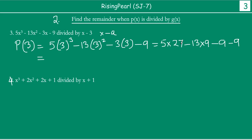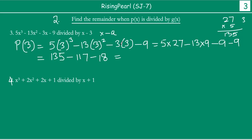So let us do this. 27 times 5: 5 sevens are 35, carry 3, write 5; 5 twos are 10, plus 3 is 13. So 135. Then 13 nines are 117. So 135 minus 117 minus 9 minus 9 will give minus 117 and minus 18, which is minus 135. So this becomes 0. Applying the remainder theorem, when you divide this polynomial by x minus 3, the remainder is 0.